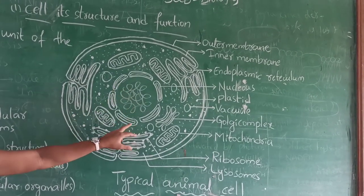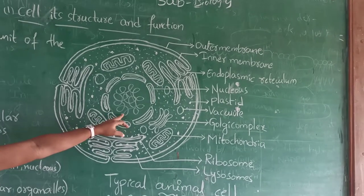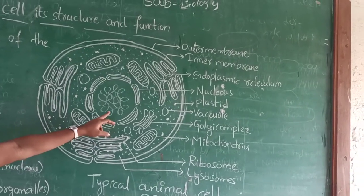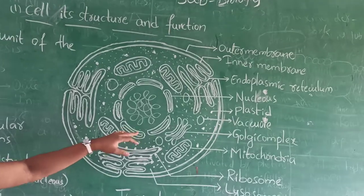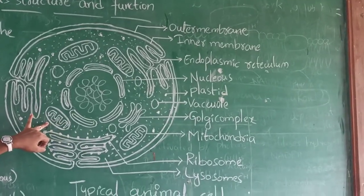This is the nucleus, this one is nuclear membrane. Inside, we have a genome, that is DNA and RNA. This is the mitochondria.